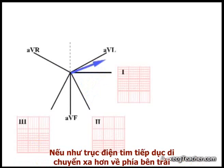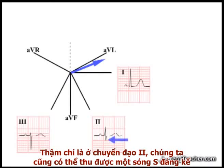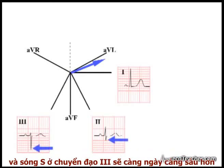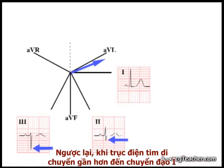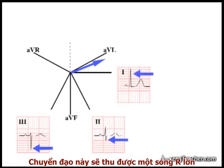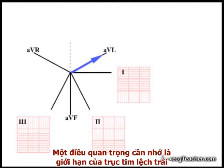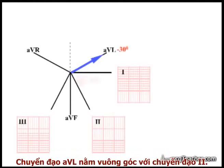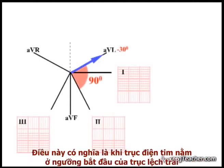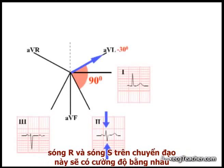As the axis continues to move further towards the left, but still within the normal range, even lead 2 will eventually start to develop a significant S wave, and the S wave in lead 3 will become progressively deeper. In contrast, as the axis is moving closer to the direction of lead 1, this lead retains a strong R wave. Crucially, note that at the limit of normality on the left, the axis is traveling straight down AVL. AVL lies at 90 degrees relative to lead 2, meaning lead 2 is isoelectric — the R wave and S wave in this lead are equal in magnitude.